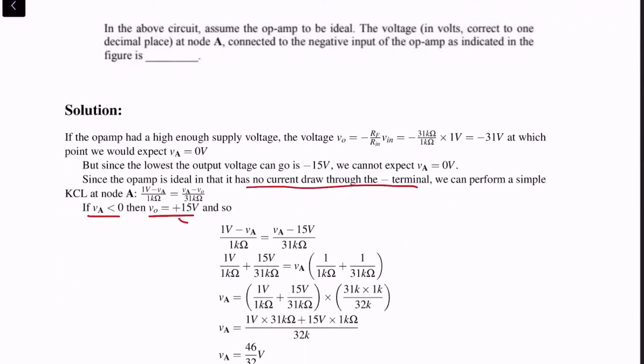Therefore, we can substitute Vout equals plus 15 volts here, and solving this further you will see Va is 46 by 32. But we had started out with the assumption that Va is less than 0, so this is a contradiction.